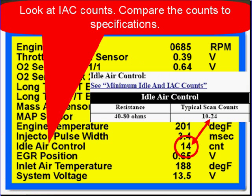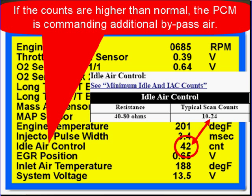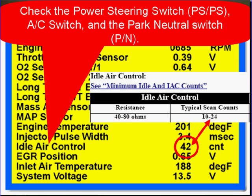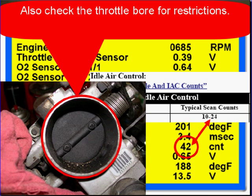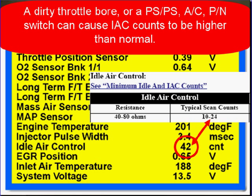Look at the IEC counts and compare them to specifications. If the counts are higher than normal, the PCM is commanding additional bypass air. Check the power steering switch, the SPS switch, the AC switch, and the park neutral switch. Also check the throttle bore for restrictions — you can see this one's carboned up. A dirty throttle bore, a power steering pressure switch, an AC switch, or a park neutral switch can cause IEC counts to be higher than normal.